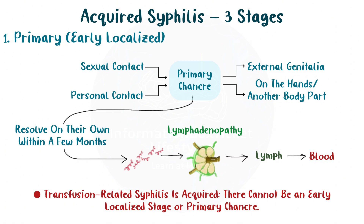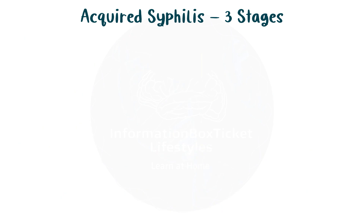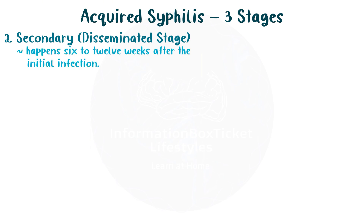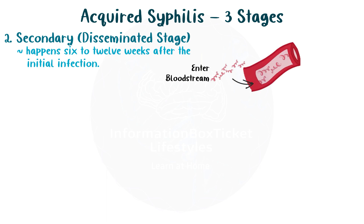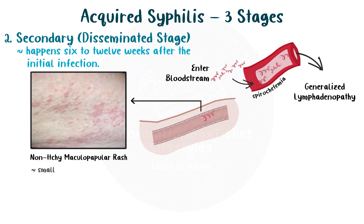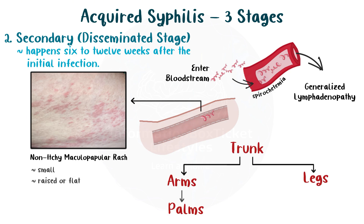The second stage of syphilis is known as the dissemination stage, and it happens 6 to 12 weeks after the initial infection. In this stage, spirochetemia — or the entry of spirochetes into the bloodstream — results in generalized lymphadenopathy, or the finding of spirochetes in lymph nodes all over the body. The spirochetes prefer to attach to and infect endothelial cells in small capillaries close to the skin, which leads to a non-itchy maculopapular rash — small, raised, or flat — that begins on the trunk and moves to the arms and legs, then the palms, soles, genitalia, and other mucous membranes.